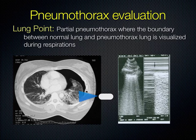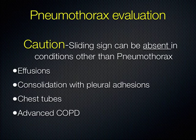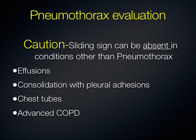One caution: other things can cause lack of sliding. If a patient has a chest tube tacking down their lung, it won't slide when breathing. Blebs or adhesions from prior infection can also prevent normal sliding. But in those cases you would still see B lines and motion on M-mode — sky ocean beach should still be there. So if you see lack of sliding, don't make your diagnosis on that alone.